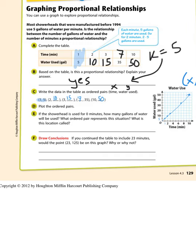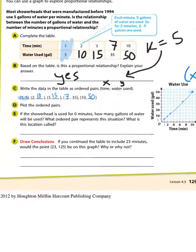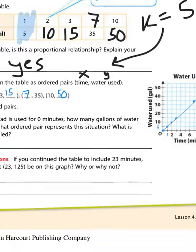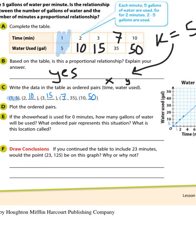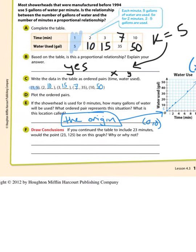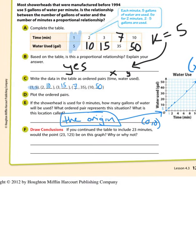Let's look at question E. If the shower head is used for 0 minutes, how many gallons of water will be used? Well, if you haven't used it yet, you haven't used any water. So that would be a point at 0, 0. The ordered pair 0, 0 represents this situation. This location is also called the origin. 0, 0 is an ordered pair on almost all proportional relationships.